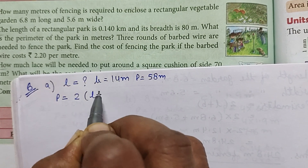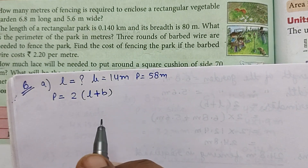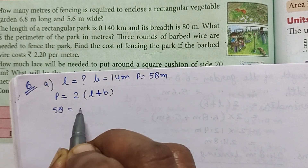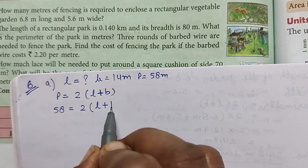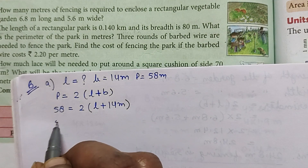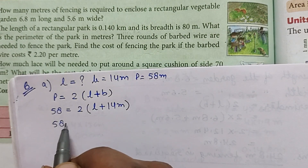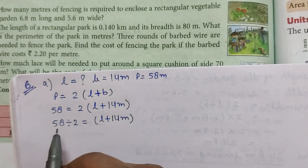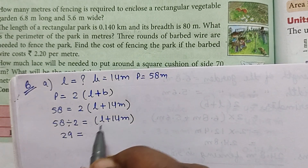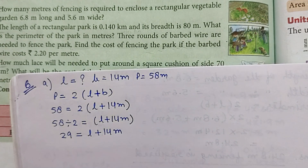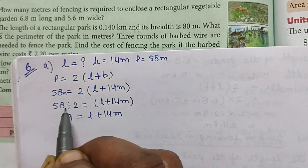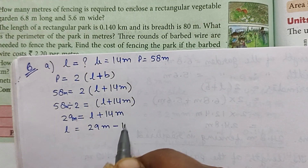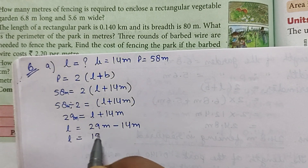First we will write the perimeter formula, then put in the given values and find the unknown. Perimeter is 58, equal to 2 into (L + 14 meters). Dividing both sides by 2: 29 meters equals L plus 14 meters. Therefore, length equals 29 minus 14, which is 15 meters.